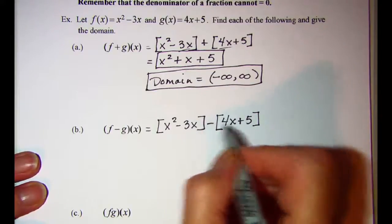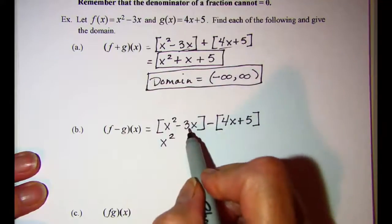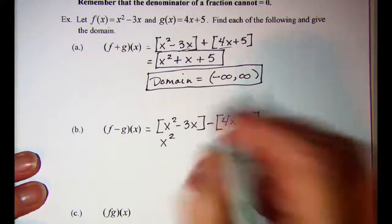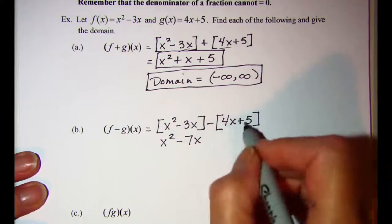We'll distribute this minus. So we have x squared and then negative 3x minus 4x is negative 7x and then minus 5.